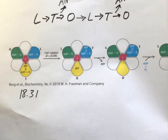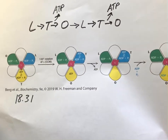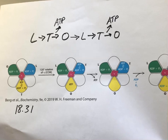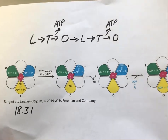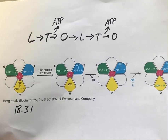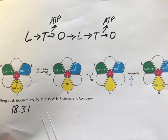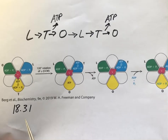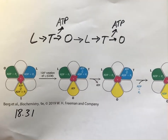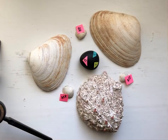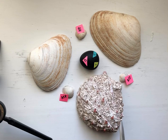With this video you should be able to understand the binding change model for how ATP synthase fabricates ATP. I'm going to use a different symbolic language than the one you see in figure 18.31. I'm going to use these seashells to represent the catalytic apparatus of the alpha-3 beta-3 hexamer for ATP synthase.